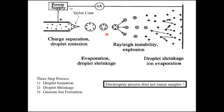There may be some heat provided, sufficient only to evaporate the solvent without causing stability problems for the sample. The formation of smaller droplets from larger ones is called Rayleigh instability explosion. The entire process takes place in three steps: first, droplet formation; second, droplet shrinkage; and third, gaseous ion formation.